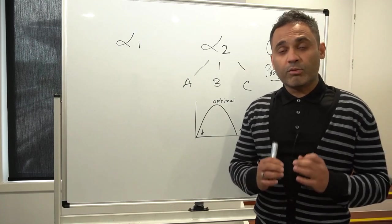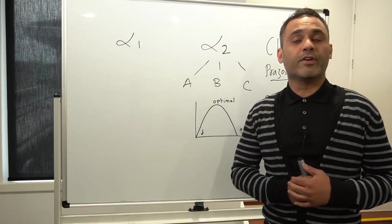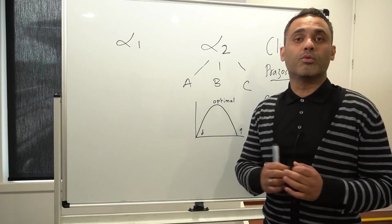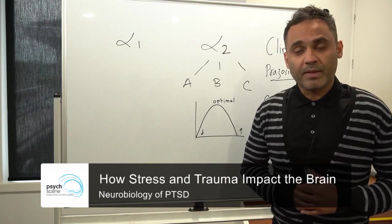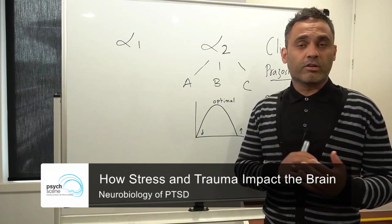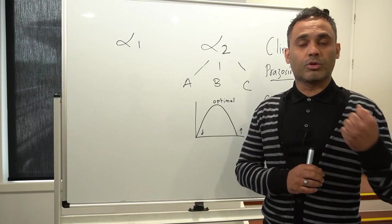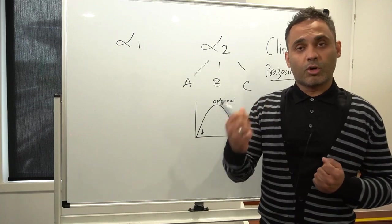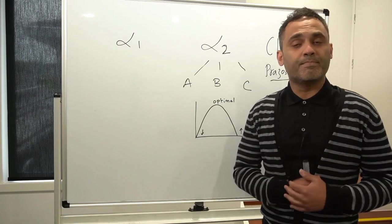At this point it would be really good to visit the video that I did on how stress and trauma affect the brain, where I described the intricate relationship between cortisol, corticotropin-releasing hormone, noradrenaline, and how that impacts the brain.